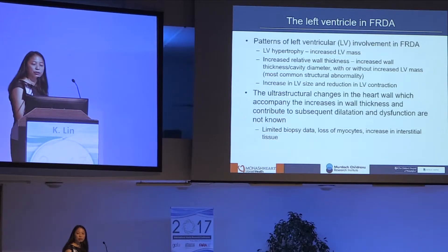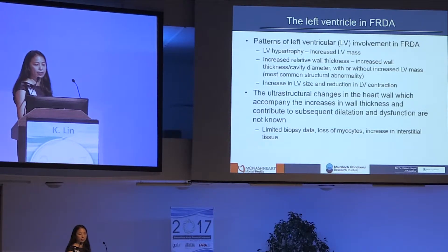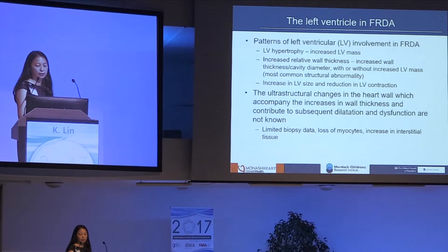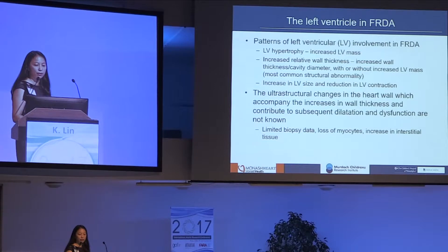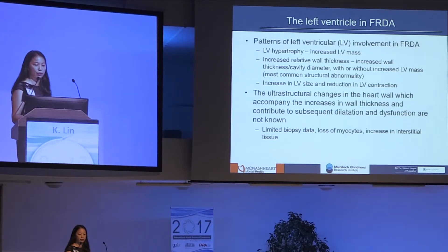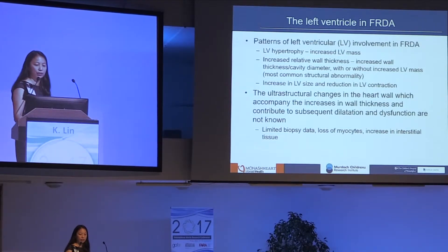The pattern of left ventricular involvement in Friedreich's can be left ventricular hypertrophy as reflected by an increased left ventricular mass, but we also sometimes see an increased relative wall thickness that does not have to be accompanied by an increased overall left ventricular mass. This increased relative wall thickness is reflected by an increase in wall thickness compared by ratio to the diameter of the ventricular cavity. Eventually, we may also see an increase in left ventricular size and a reduction in left ventricular contraction — that's the dilated cardiomyopathy phenotype.